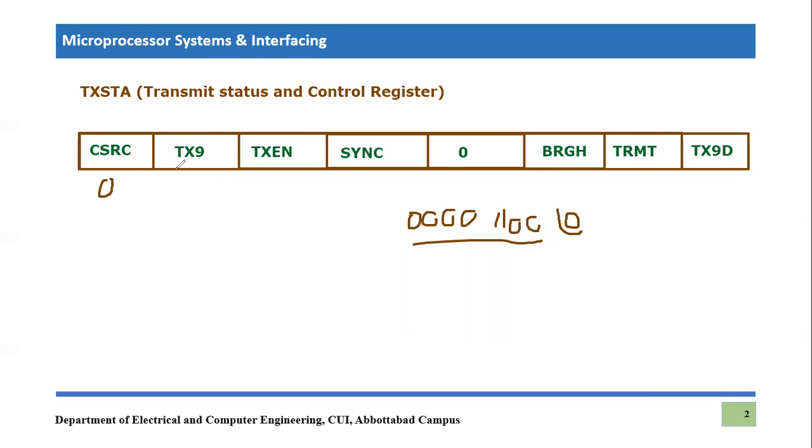This will be equal to one and the bit will be shared in the last, in the least significant bit, which is TX9D, D for data. So let's say if your parity is zero, it is going to be stored here. If you are not using nine bit information, you will simply put it equal to zero.